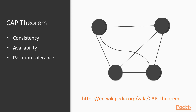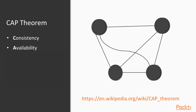In year 2000, Eric Brewer proposed the CAP theorem for distributed data stores. It's broken down into three different types of guarantees. Consistency means that if you write something to one node, you will get the same data on another node, otherwise you will get an error. Availability means that if you query a node, it will respond even if the data is not the most up to date.